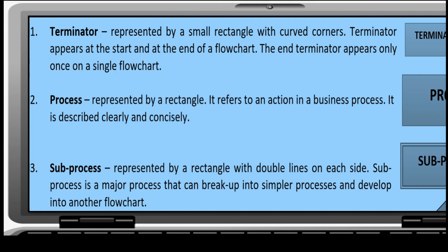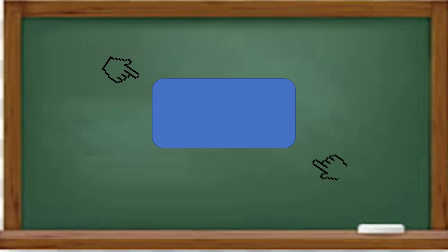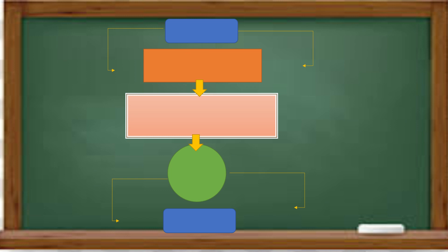Terminator. Represented by a small rectangle with curved corners. Terminator appears at the start and at the end of the flowchart. The end terminator appears only once on a single flowchart.